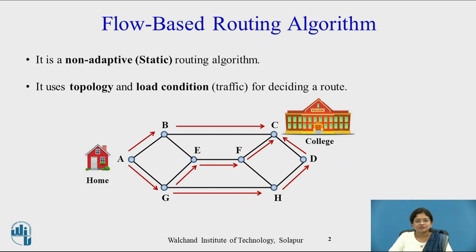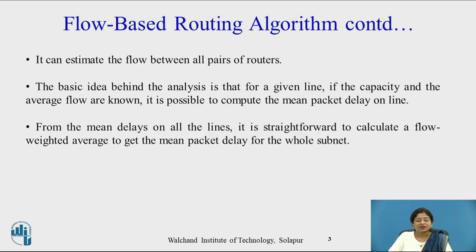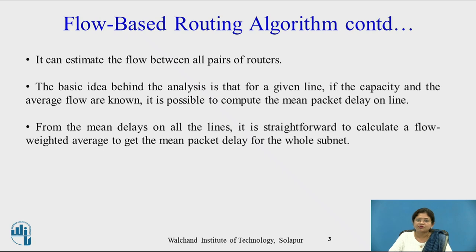So let us see this flow-based routing algorithm in detail. It can estimate the flow between all pairs of routers. The basic idea is that for a given line, if the capacity and the average flow are known, then it is possible to compute the mean packet delay on that line. From the mean packet delay on all the lines, it is straightforward to calculate the flow-weighted average and to get the mean packet delay for the whole subnet.